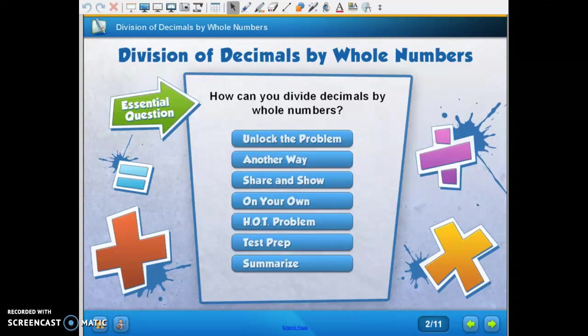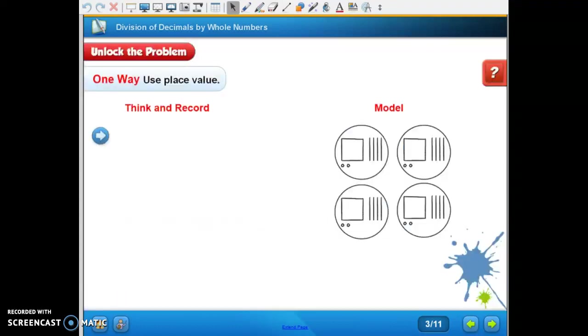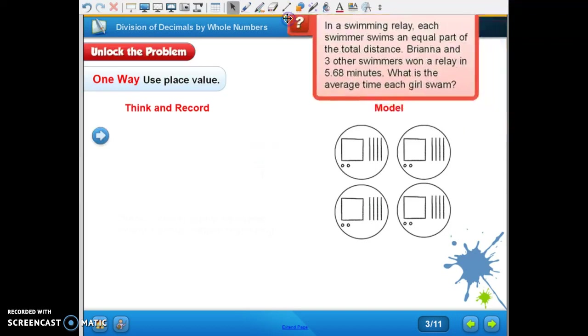So today we're looking at 5.4, division of decimals by whole numbers. This is no more than dividing in the way that you already know. Here is our problem. In a swimming relay, each swimmer swims an equal part of the total distance. Brianna and three other swimmers won a relay in 5.68 minutes. What is the average time each girl swam?